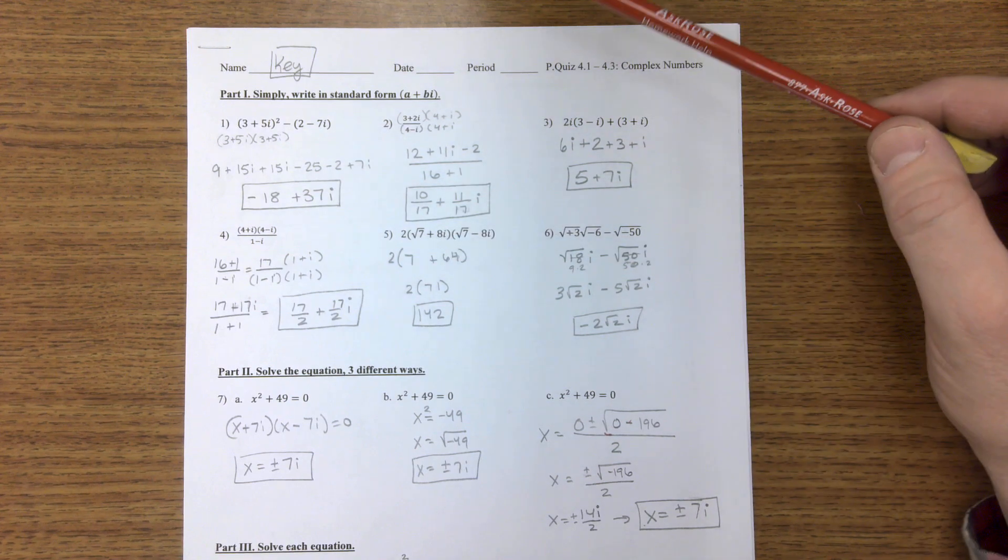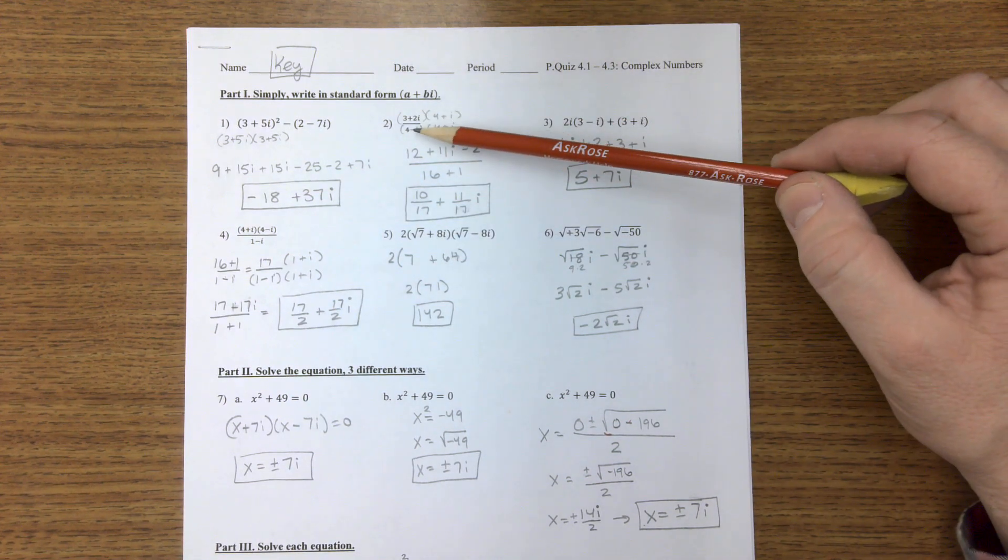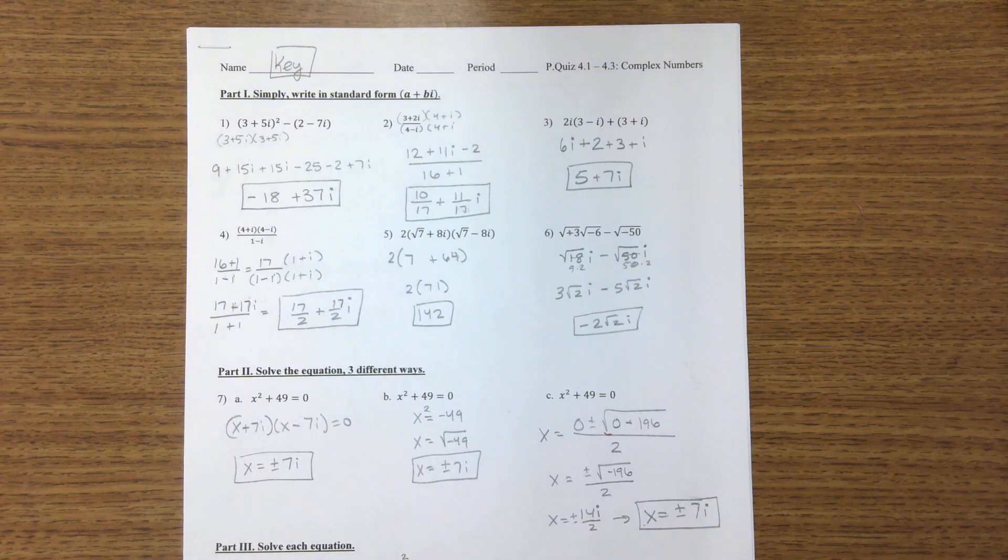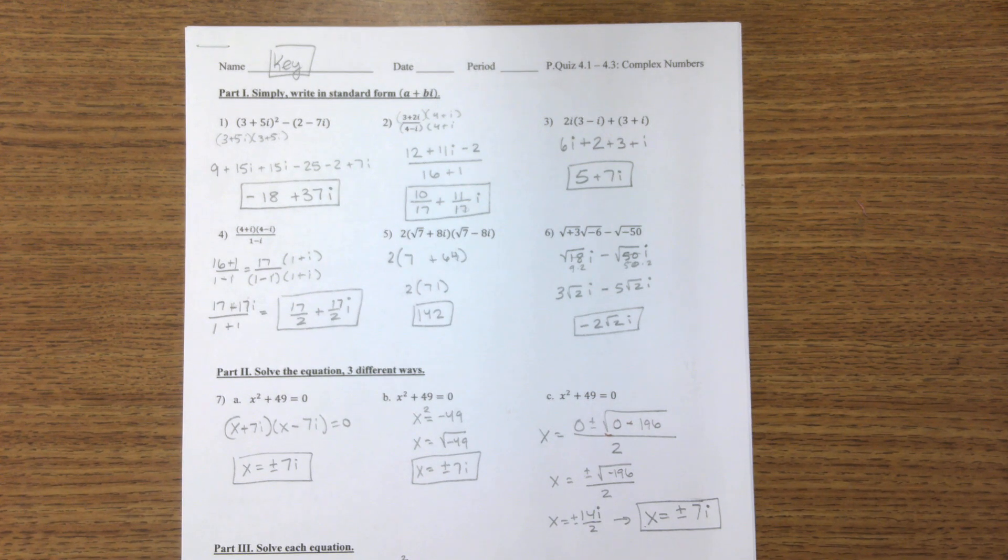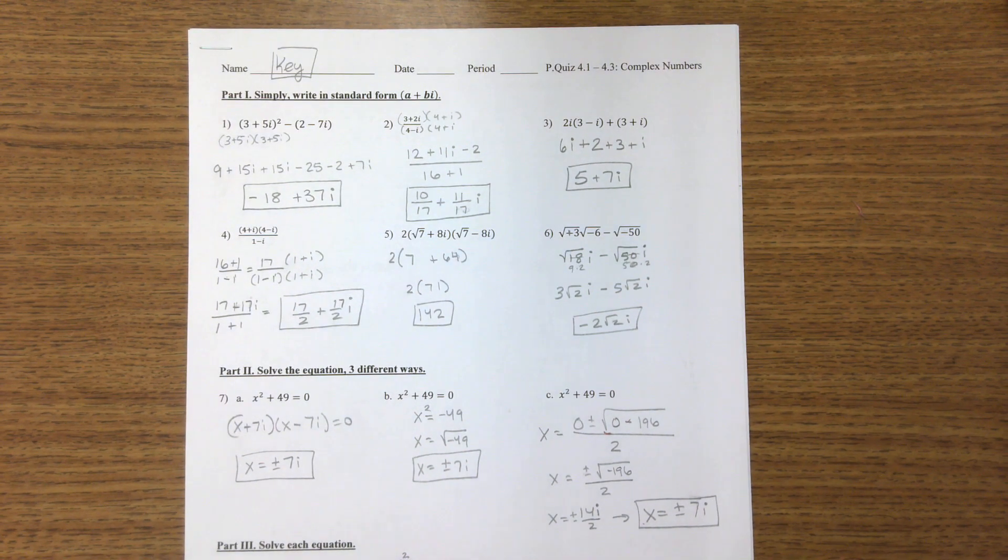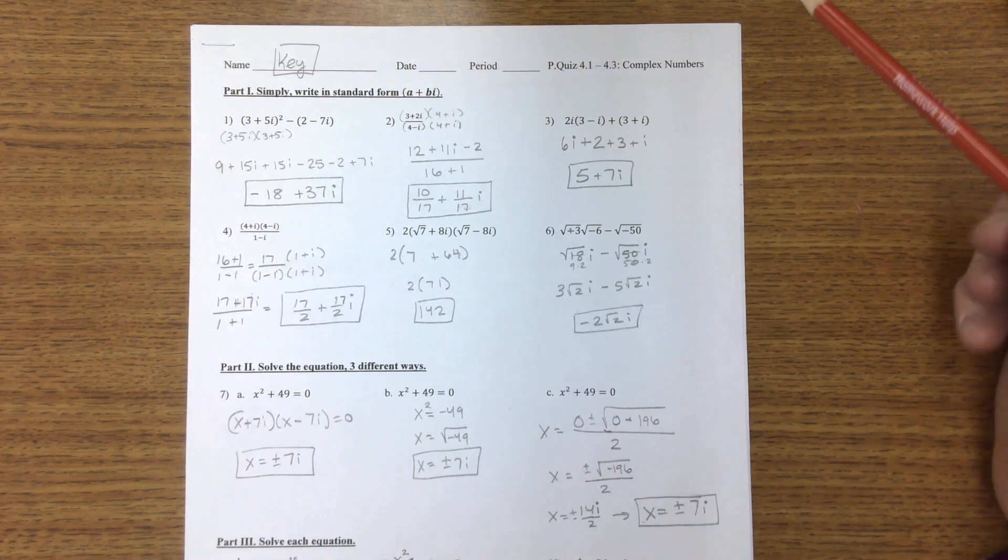Foil it, combine your like terms. You can't divide here, so you multiply by the conjugate. That's what you'll see there. I multiplied by 4 plus i instead of 4 minus i, and it will make everything work.